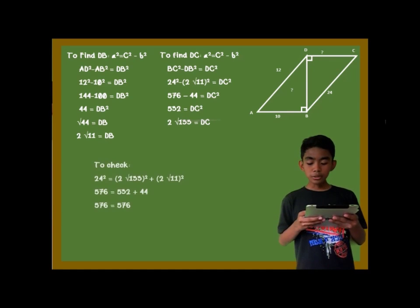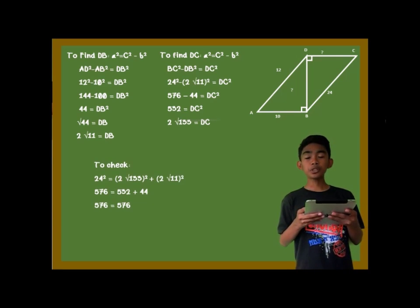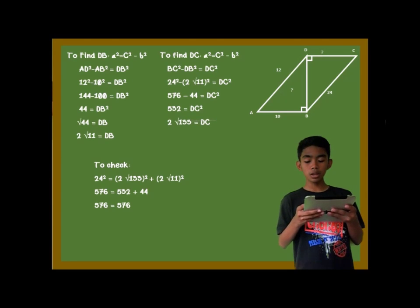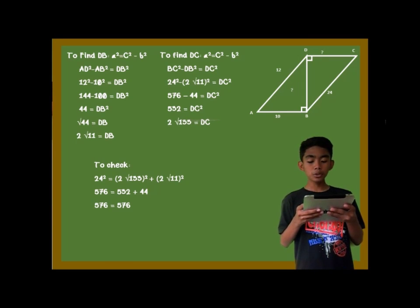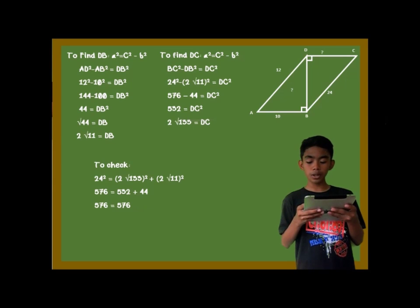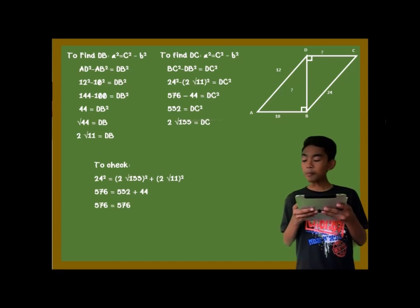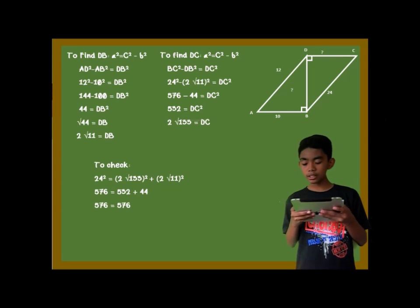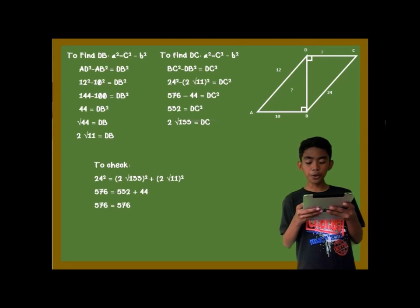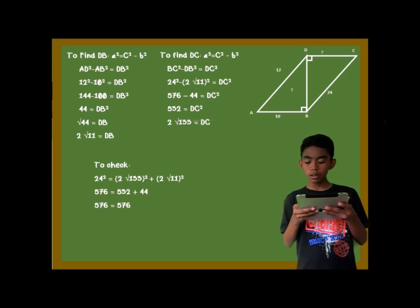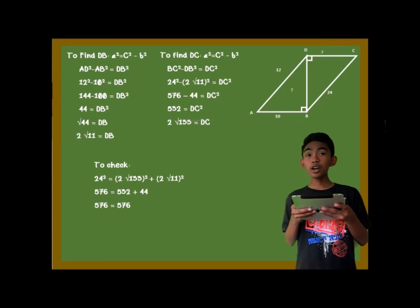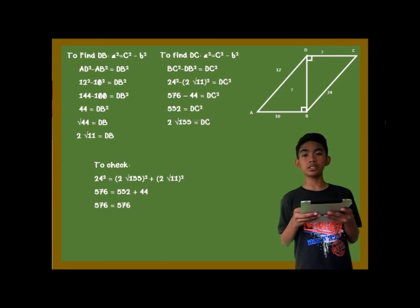To check: 24 squared is equal to (2 square root of 11) squared plus (2 square root of 133) squared. Then 576 is equal to 44 plus 532, and they are both equal to 576.